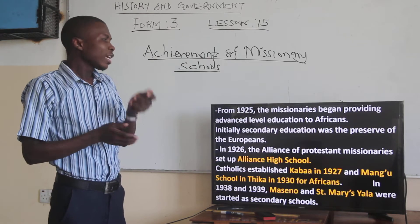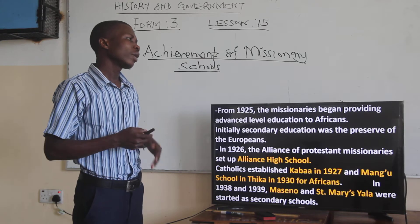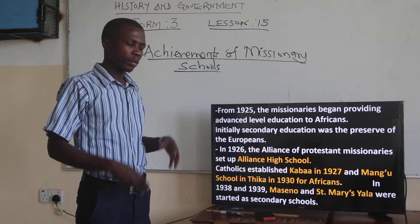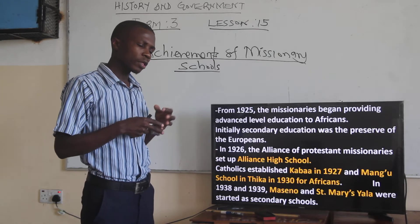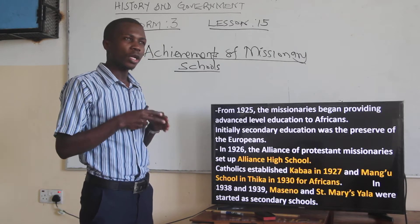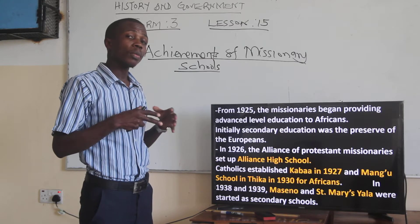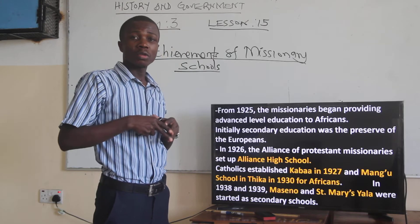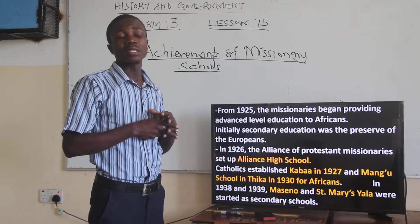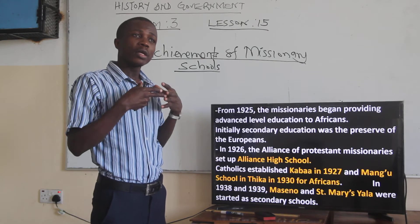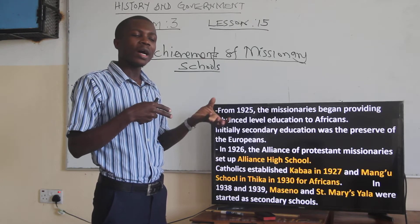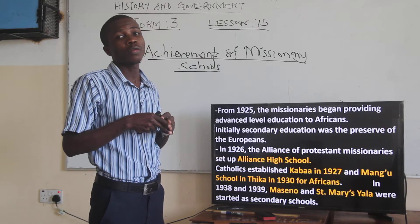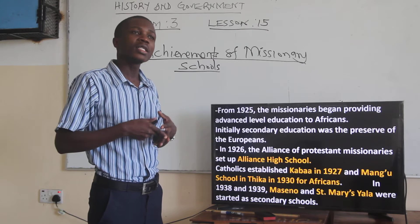From 1925, the missionaries began providing advanced level education to Africans. Previously we talked about how the missionaries started education with the elementary program, where education was only provided to the lower grades. With time, they saw the need to add other levels, and thereafter there was introduction of high school, primary school, and later universities.